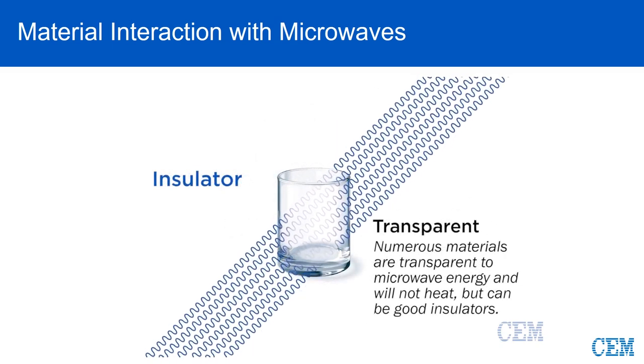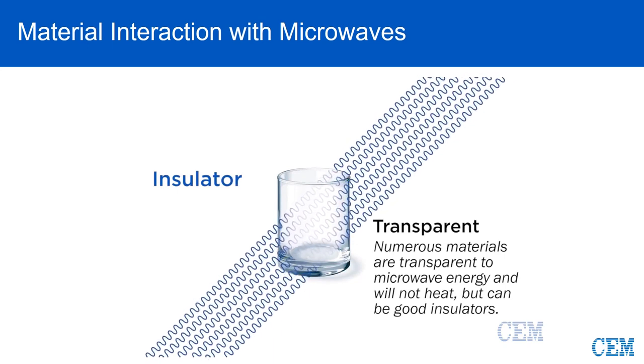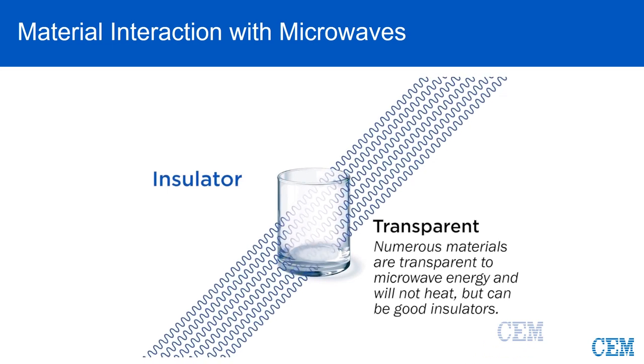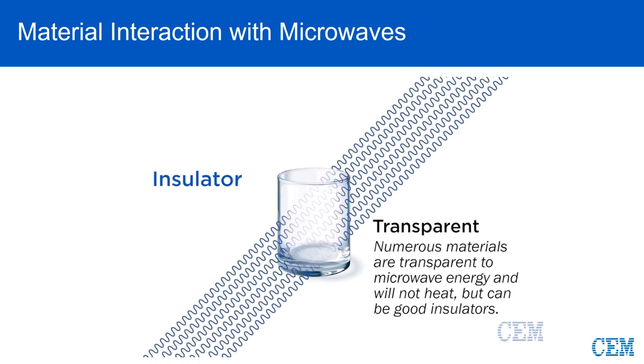Insulators are materials that are transparent to microwave energy but then hold the heat generated by the collision energy. Teflon, glass, and quartz are good insulators, which is why they are the primary materials used in our digestion vessels.